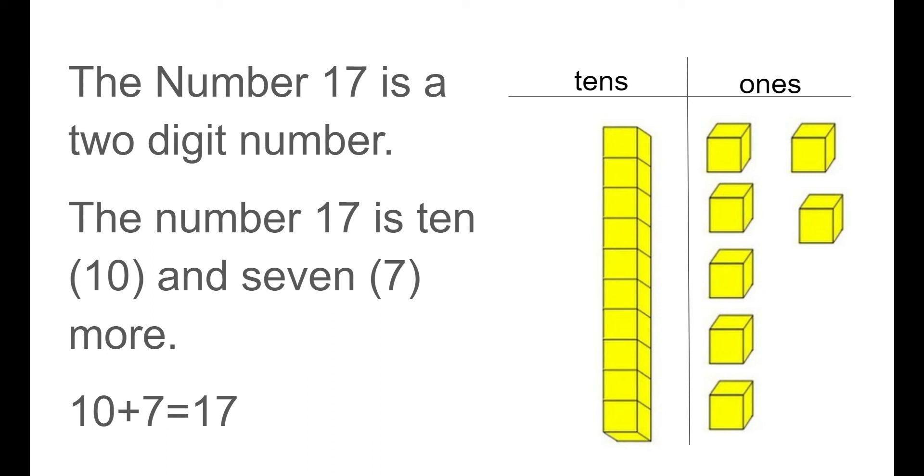The number 17 is a two-digit number. The number 17 is 10 and 7 more. We can also say 10 plus 7 equals 17.